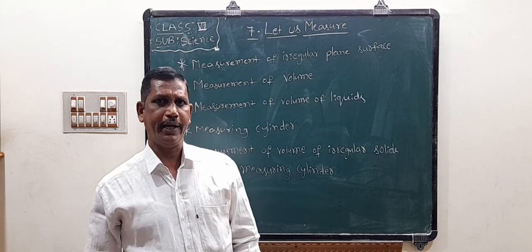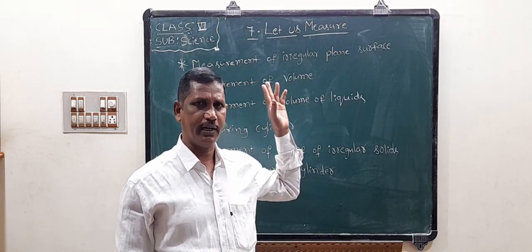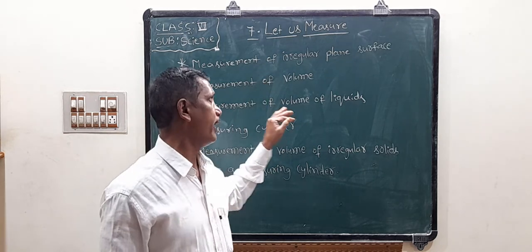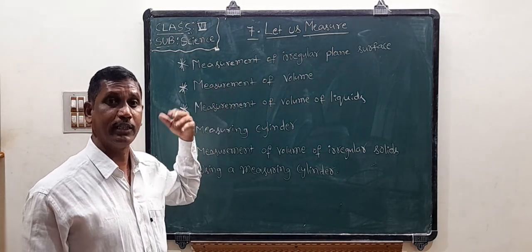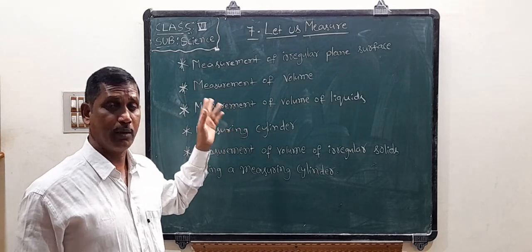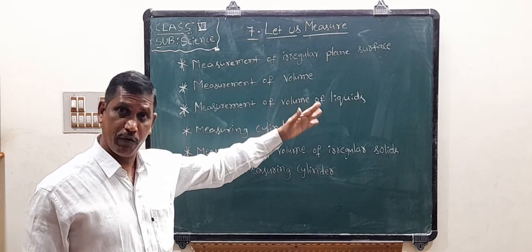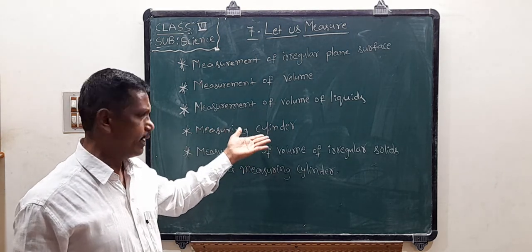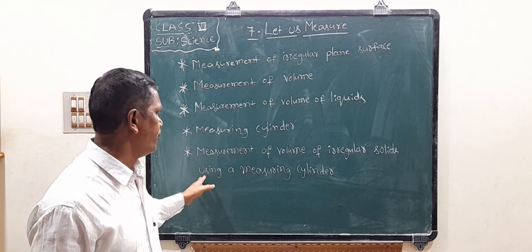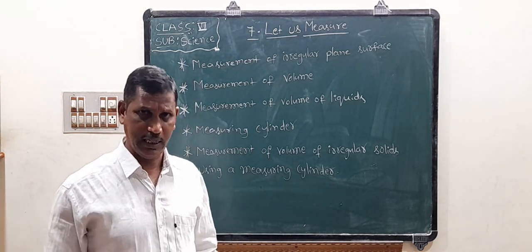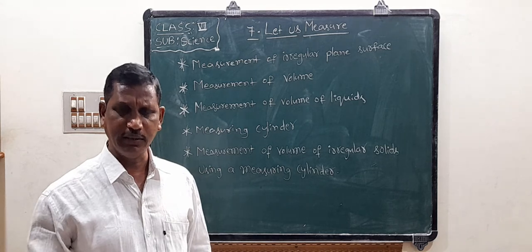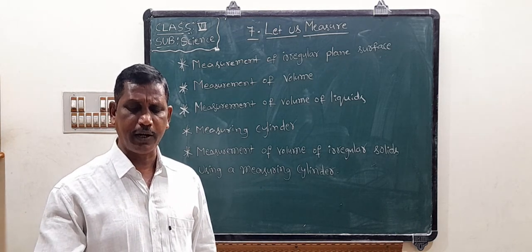Good morning students. Today we discuss the 7th chapter in our science textbook - Let us Measure. In this lesson we discuss the measurement of irregular plane surface, measurement of volume, measurement of volume of liquids, and the measuring cylinder. Take your textbook to page number 78, Activity 6: Measurement of Irregular Plane Surface.